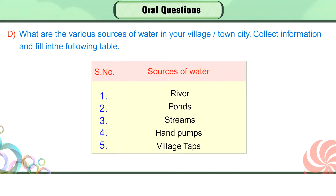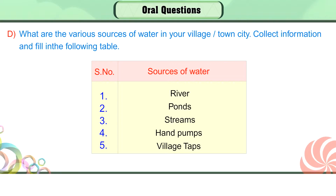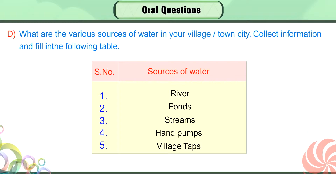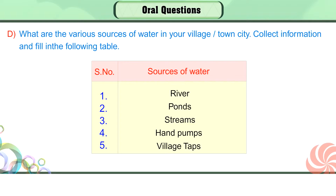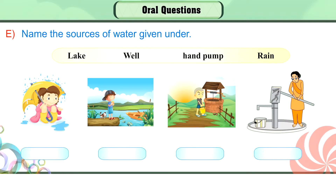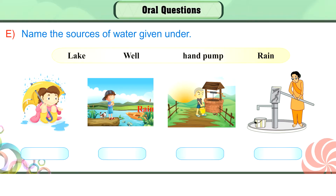D. What are the various sources of water in your village, town, or city? Collect information and fill in the following table: serial number and sources of water. E. Name the sources of water given.